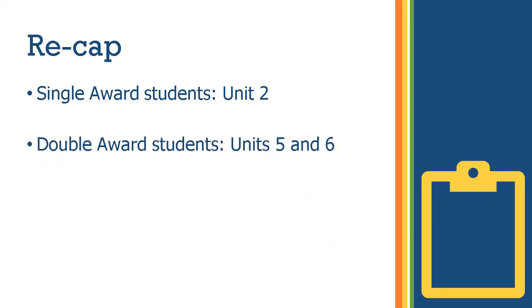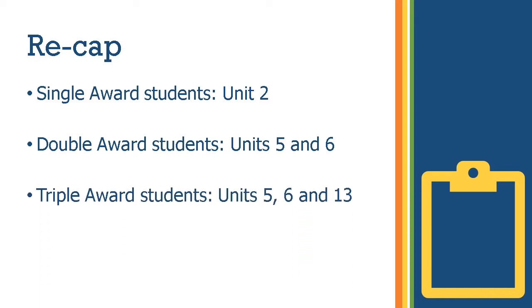As you know, it was all a little bit of a mess last year with the pandemic starting, but essentially just before the summer you should have started some work on the upper sixth units. Those of you doing the single award should have been working through some parts of unit two, double award you'd have been focusing on five and six, and the triples you'd have been looking at five, six and thirteen. Those are going to be the units that we are going to pick up as we move on with this term.